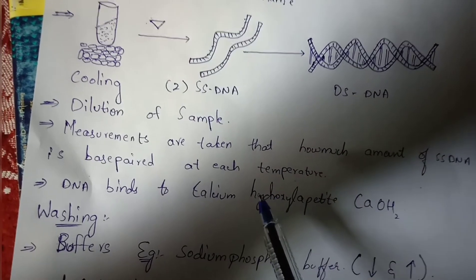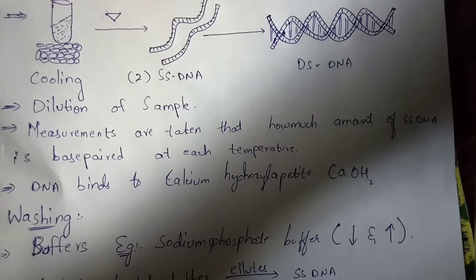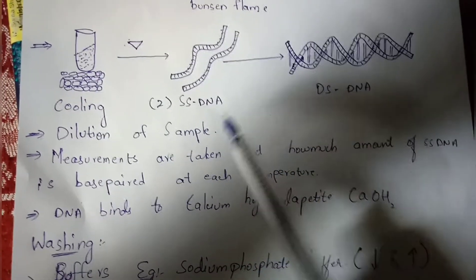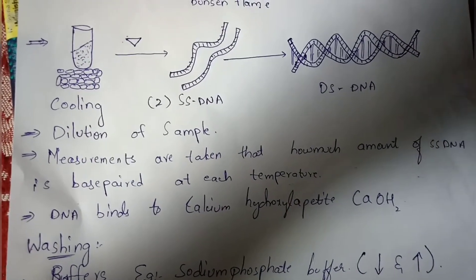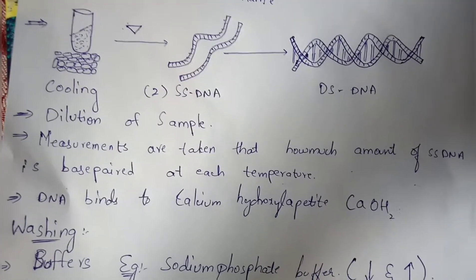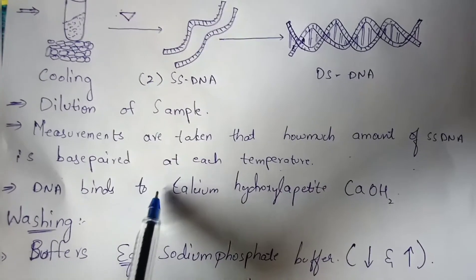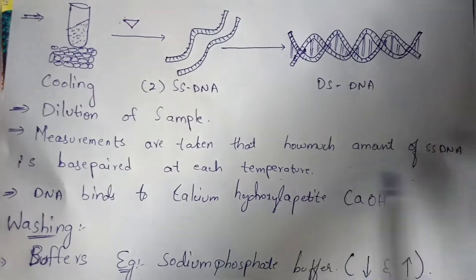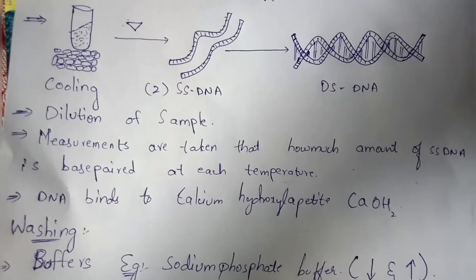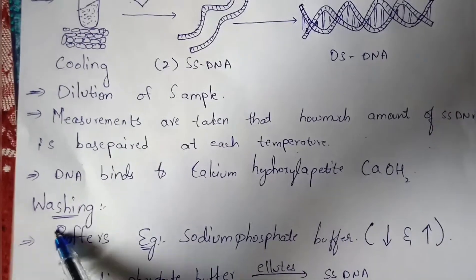The next step: DNA binds to calcium hydroxyapatite (CaOH₂). Calcium hydroxyapatite is added into the test tube. During the experiment, some DNA remains as single-stranded DNA and does not get converted — about 50% becomes double-stranded and 50% remains single-stranded. Both the single-stranded and double-stranded DNA left in the test tube will bind to the calcium hydroxyapatite.